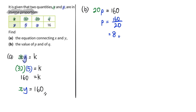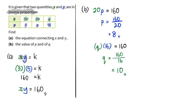p equals 160 divided by 20, which gives p equals 8. And again using this equation, the next set of values has x equal to q when y is 16. So q multiplied by 16 equals 160, and dividing by 16 gives q equals 10. We are done with this question.